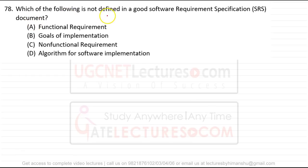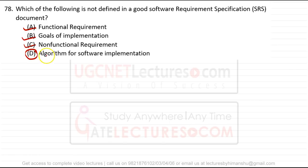Question 78: which of the following is not defined in a good SRS (Software Requirements Specification) document? An SRS documents all requirements — functional requirements, non-functional requirements, and goals of implementation — but does not include implementation details or algorithms. The algorithm for software development is included in the design document, not the SRS. So the answer is: algorithm for software implementation.